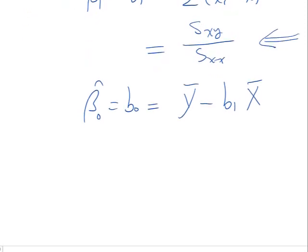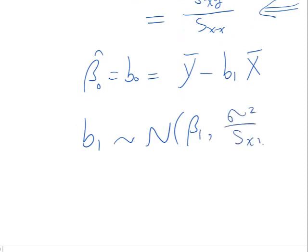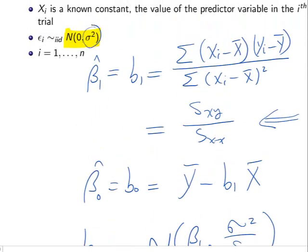The goal in this video is to show you that b₁ is normally distributed with mean β₁ and variance σ²/Sₓₓ, where σ² is the variance of εᵢ.